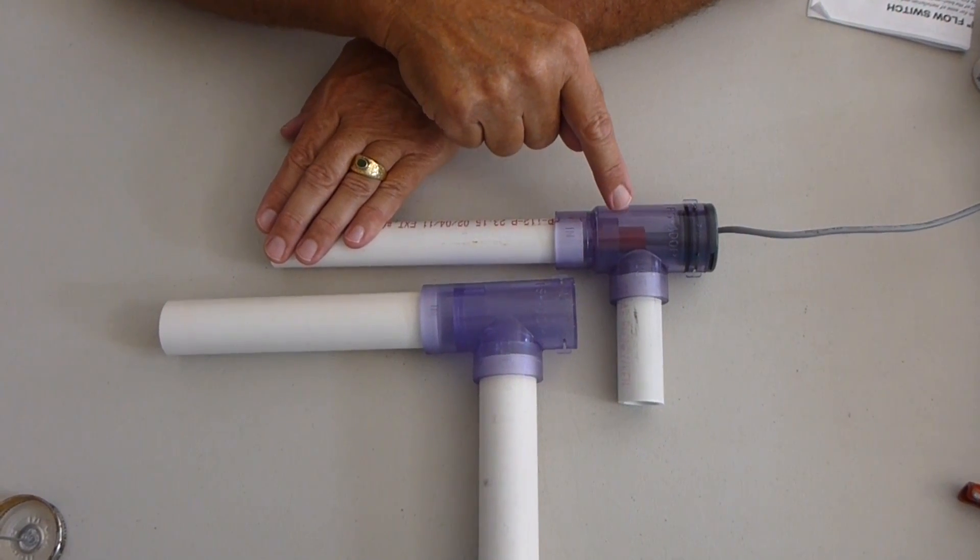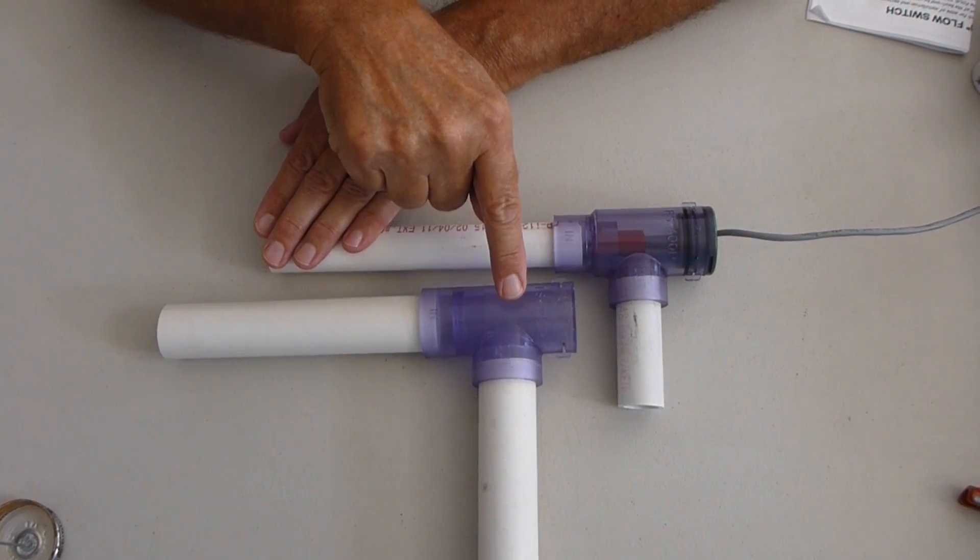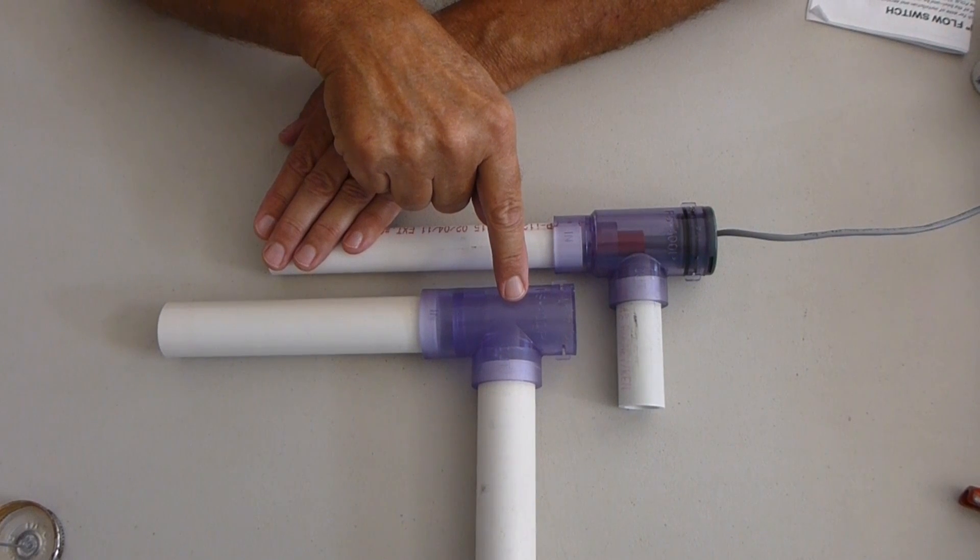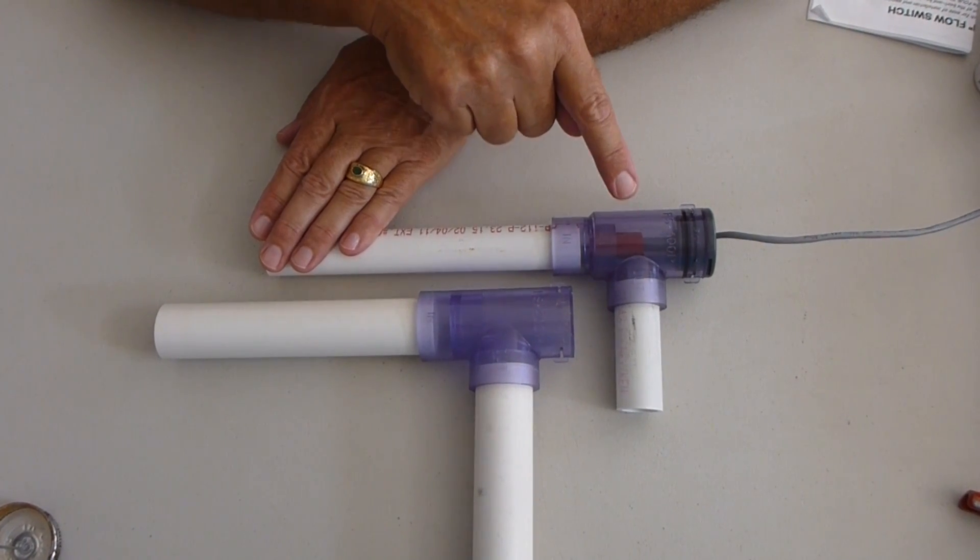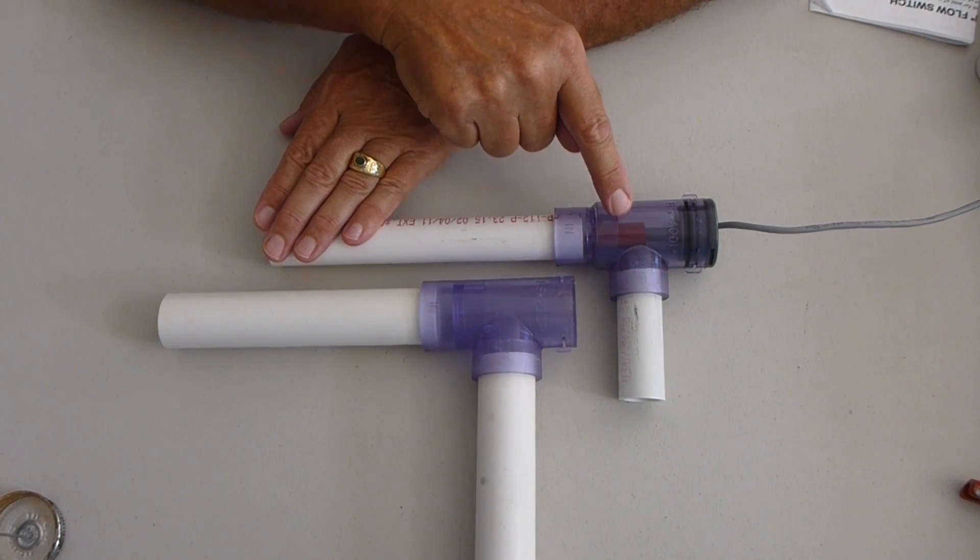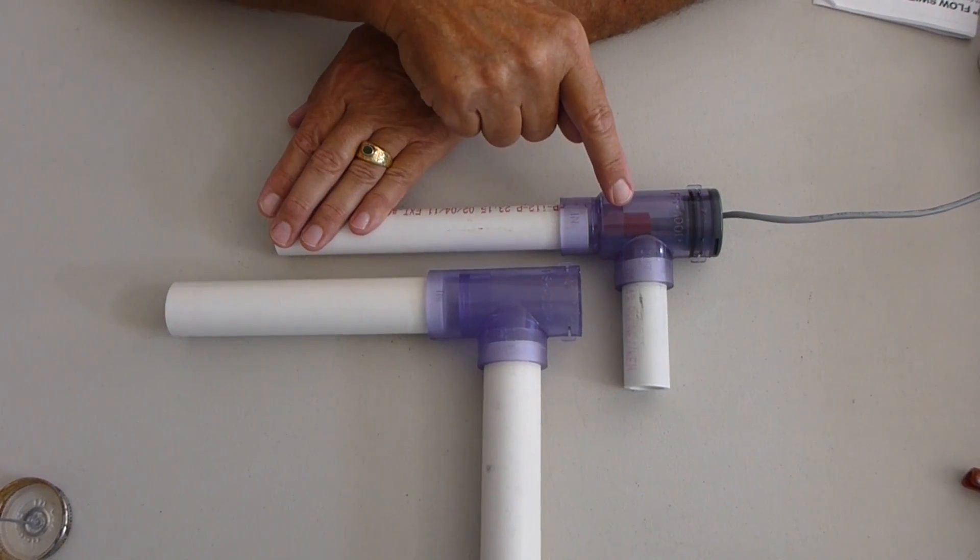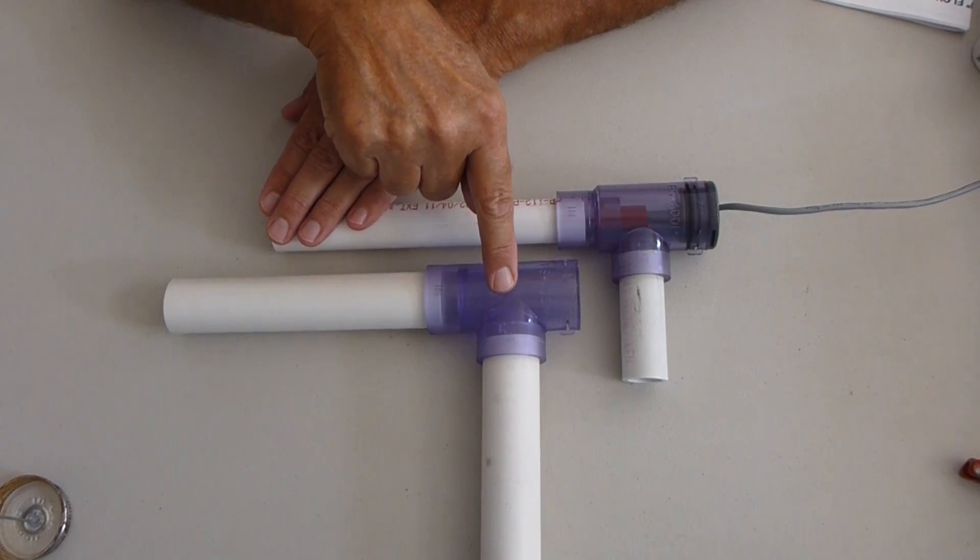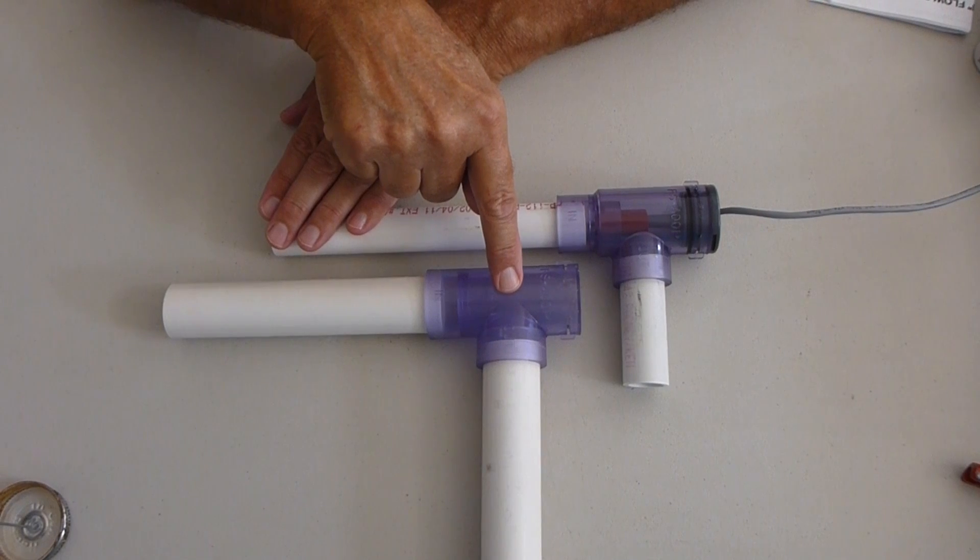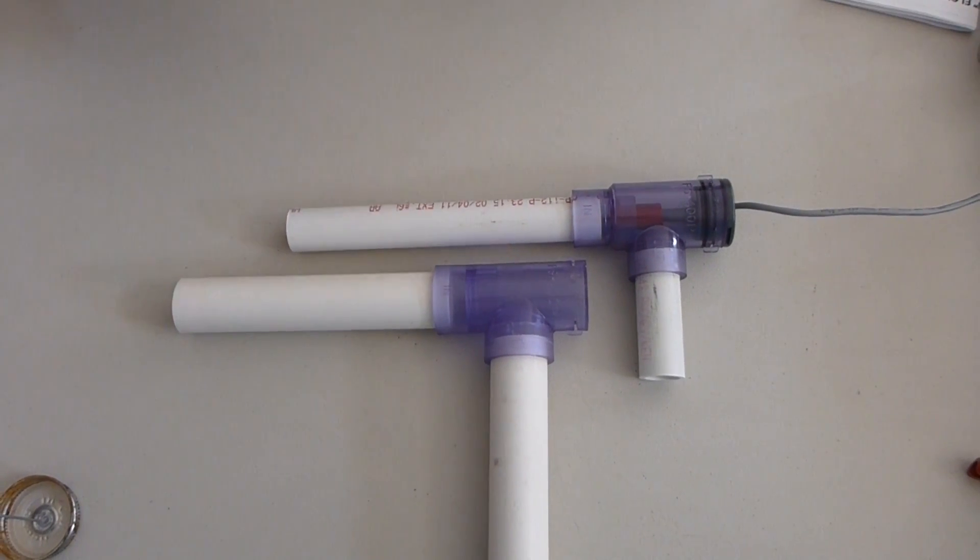That's why in 95 plus percent of all my installations in 30 years of being in the field, I use the three-quarter inch. The only time that I use the one inch is if it was required by code. So the flow characteristics, the performance characteristics of the three-quarter inch in my opinion are superior to the one inch. We have the one inch because we do understand that in many cases you'll need the one inch for code requirements.